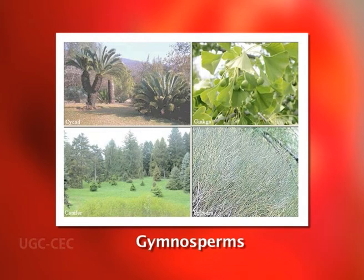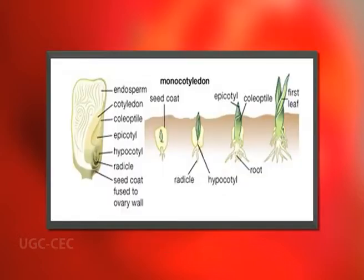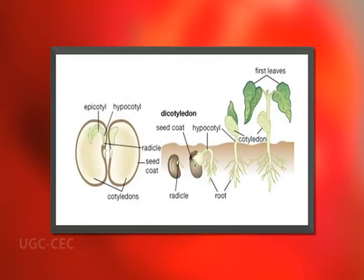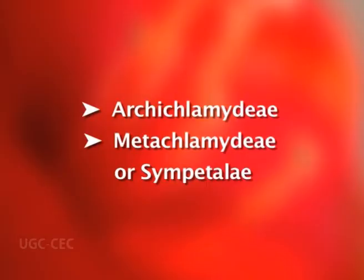The gymnosperms are considered to be more primitive and hence were placed before angiosperms. The monocotyledons precede the dicotyledons, an idea which gets little support from recent work on fossil data. They never thought that the former group is derived from the latter. The class Dicotyledons was divided into two subclasses: Archichlamydeae and Metachlamydeae (or Sympetalae).